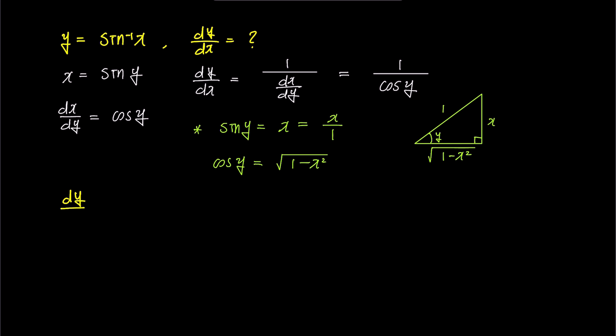Earlier, dy over dx was 1 over cosine y, so ultimately, dy over dx becomes 1 over square root 1 minus x squared.